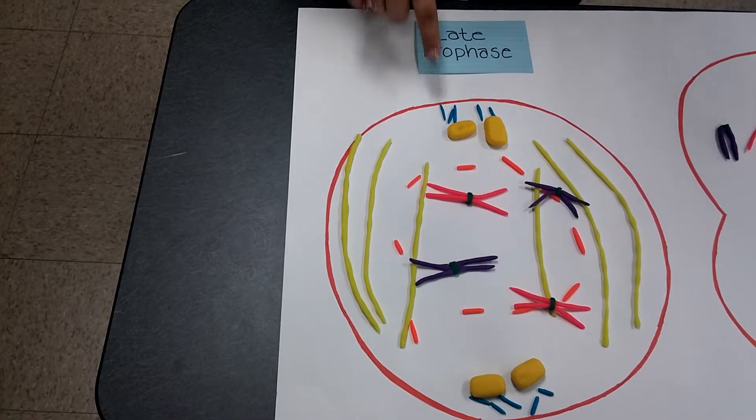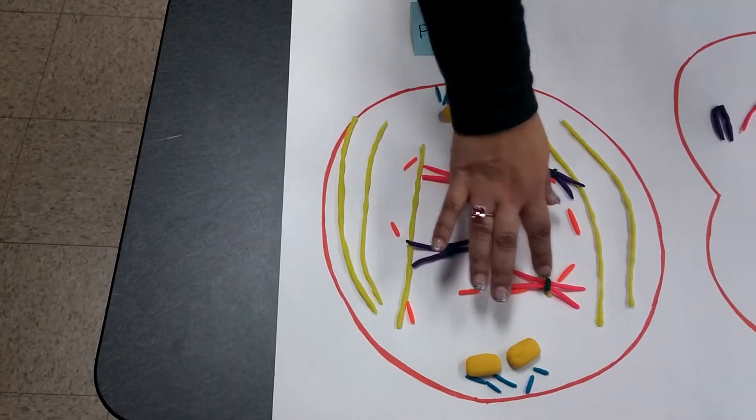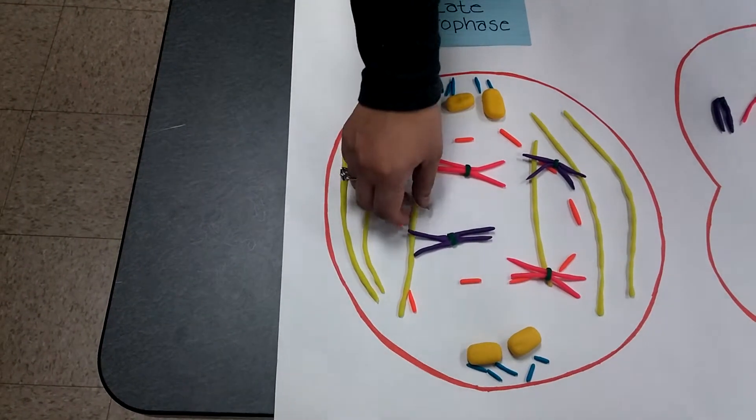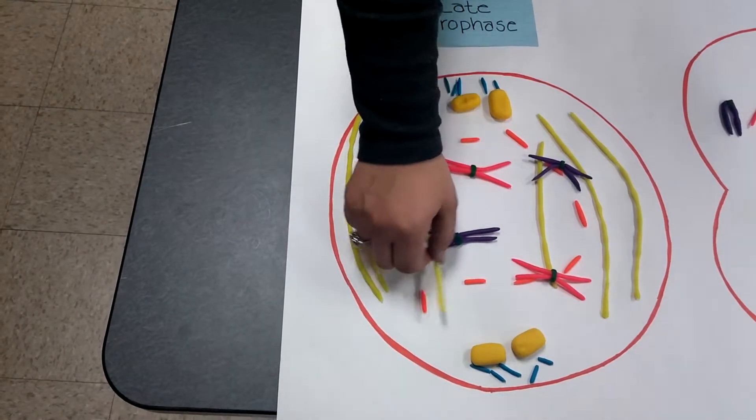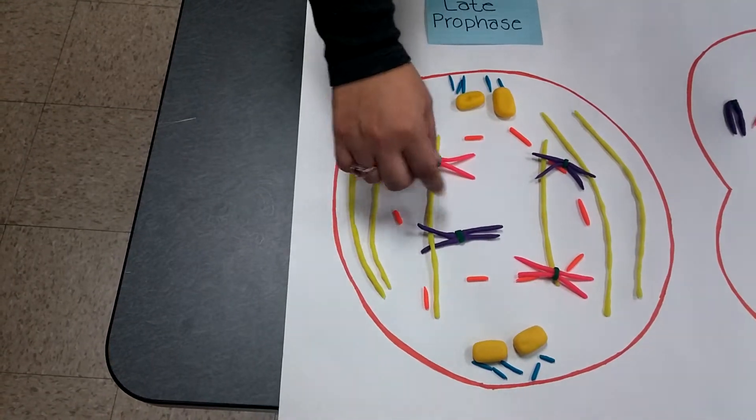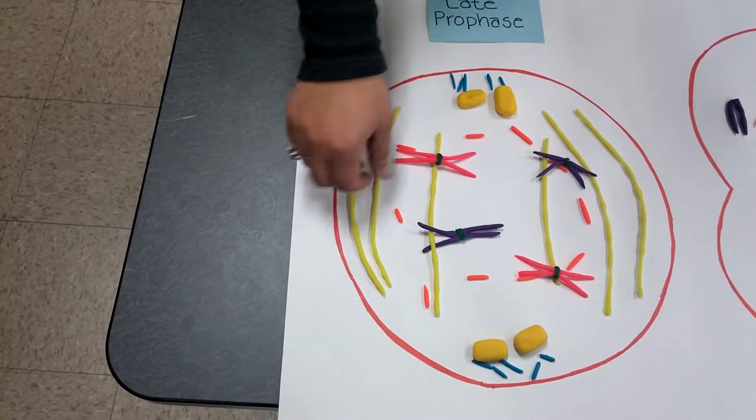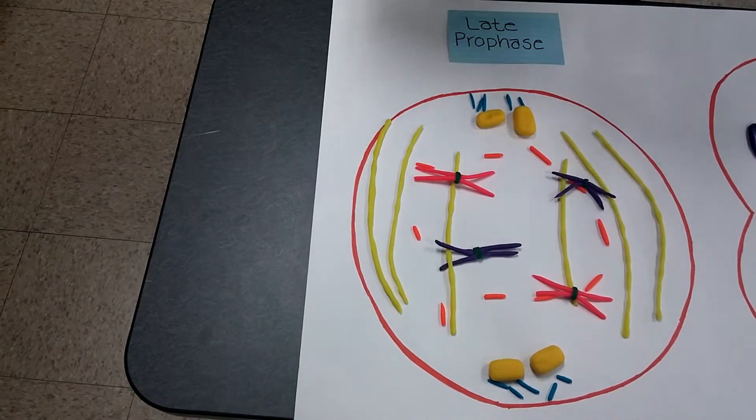In late prophase, the nuclear envelope breaks up and the spindles start to interact with the chromosomes. They start to attach to the kinetochores in the middle of the chromosomes and then become the kinetochore microtubules.